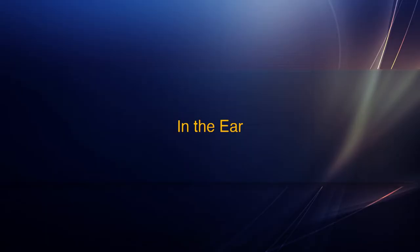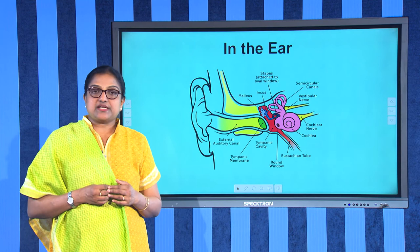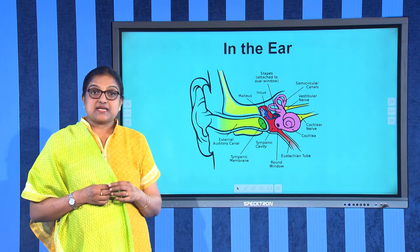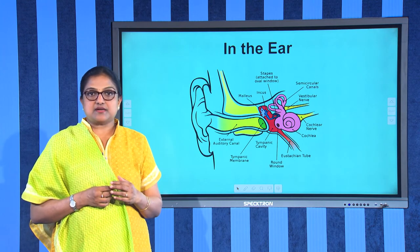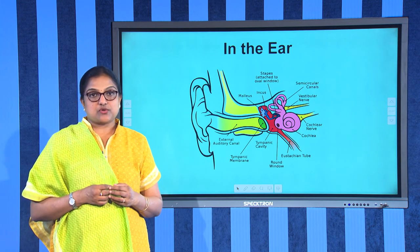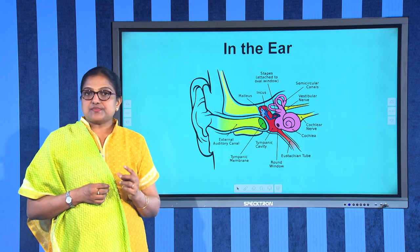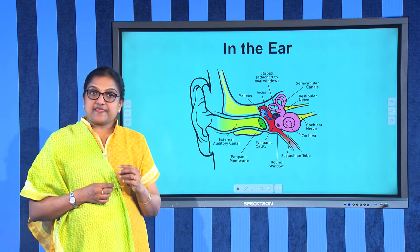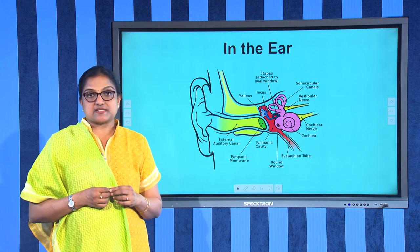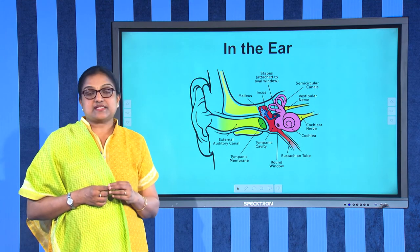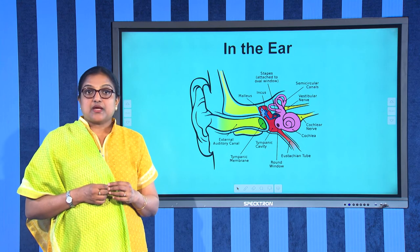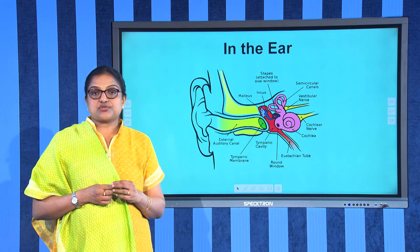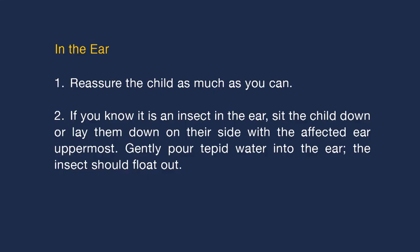In the ear: this is most common in young children who have a tendency to put small objects into their ears. The child will have pain in the ear and hearing on that side may be affected. Sometimes an insect may fly into the child's ear and they may feel vibrations. Never poke anything into the child's ear — you could easily push the object even deeper, causing damage to the eardrum.